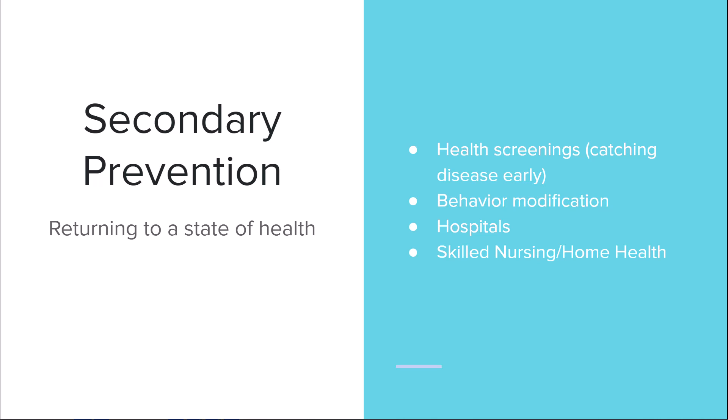Secondary prevention is about returning the patient to a state of health — catching the disease early through health screenings and behavior modification. For example, helping someone lose weight or encouraging a cancer patient to quit smoking. You'll see this mostly in hospitals, but also in home health or skilled nursing facilities, which serve as a bridge between hospital and home, with the goal of getting patients back to independence.